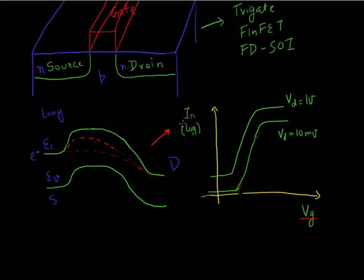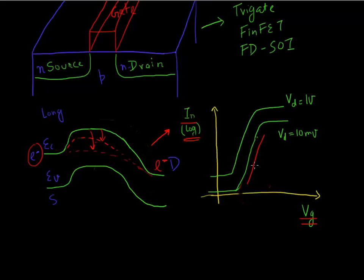This is how it manifests itself in the IDVG characteristics of the transistor. Plotted here is the drain current on a log scale as a function of gate voltage. As you apply a gate field or gate voltage and lower the barrier for electrons to flow from source to drain, you see an exponential increase in drain current as a function of gate voltage. The slope of this exponential increase is known as the subthreshold slope, denoted by SS.